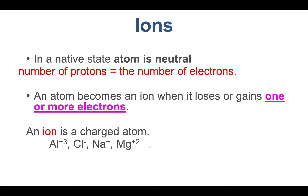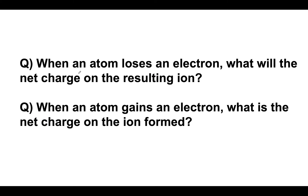These are all ions. When an atom loses one electron, the net charge on the resulting ion is plus one. When an atom gains an electron, the net charge on the ion is negative one, because there is one extra electron.